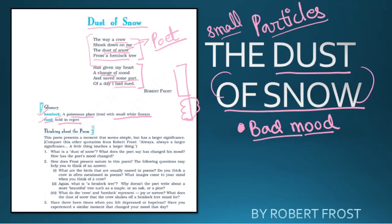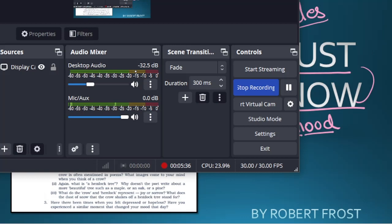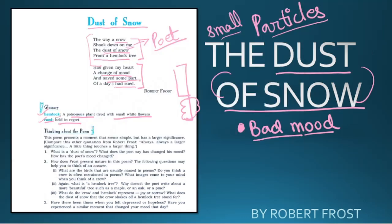To recap briefly: the poet was standing near a hemlock tree in a bad mood, and a crow was sitting on that hemlock tree. Due to some movement, small particles of snow fell on the poet. The poet then realized that his mood had been bad and upset, but this act of the crow gave him a good feeling.